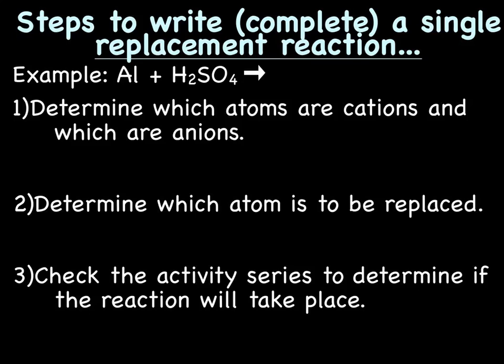Let's go over the steps to write or complete a single replacement reaction. As we're going through the steps, we'll do the example Al plus H2SO4. We know this is going to be a single replacement reaction because we have a single element and a compound. This compound's ionic, so we can have a displacement or replacement reaction. Step one: determine which atoms are cations and which are anions. Go through and write down the complete charges. We've got aluminum plus H2SO4 producing something, possibly.